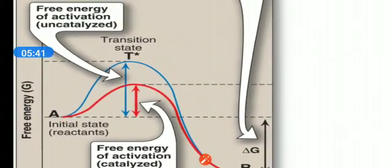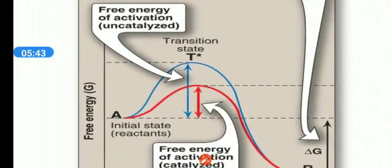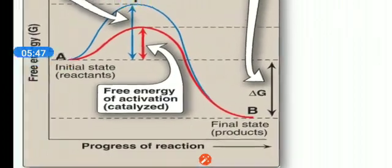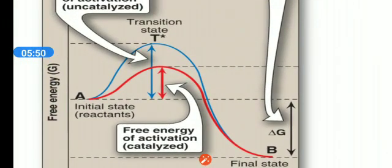If we consider A is being converted into B, without enzymes you can appreciate the blue line.